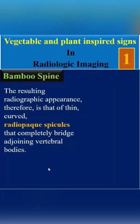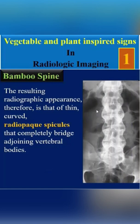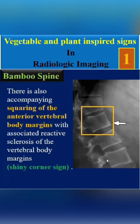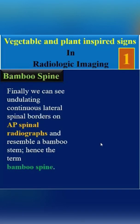The resulting radiographic appearance is that of thin, curved, radiopaque spicules that completely bridge adjoining vertebral bodies, and squaring of anterior vertebral body margins with associated reactive sclerosis of the vertebral body margins — named the shiny-corner sign.